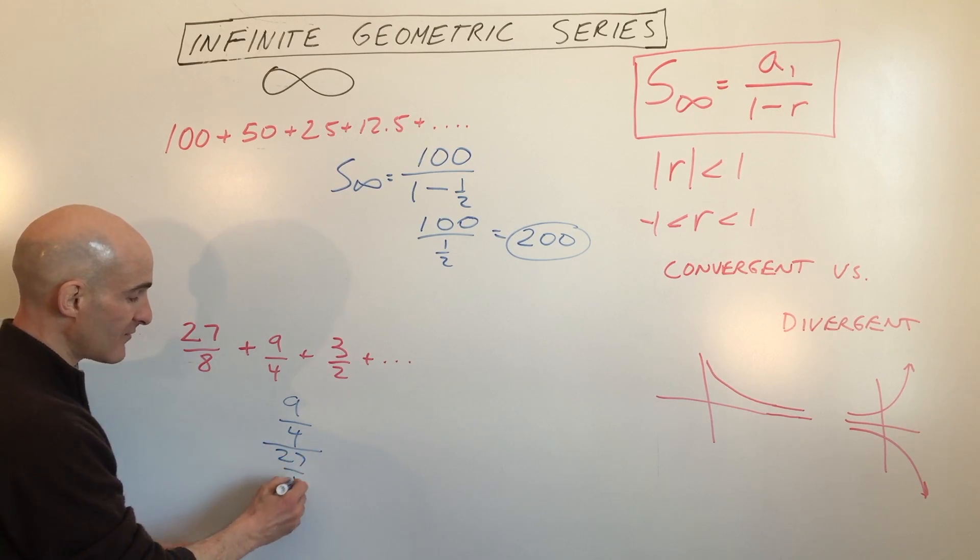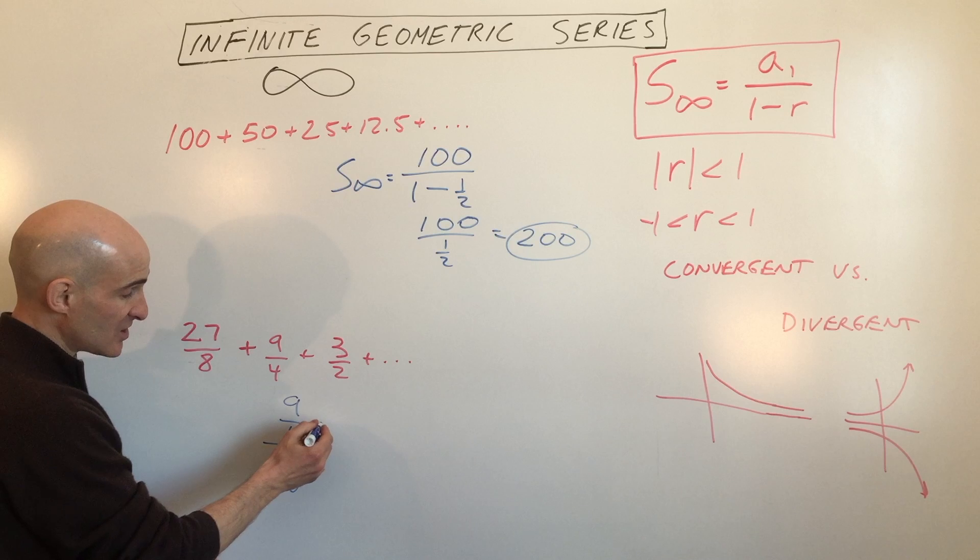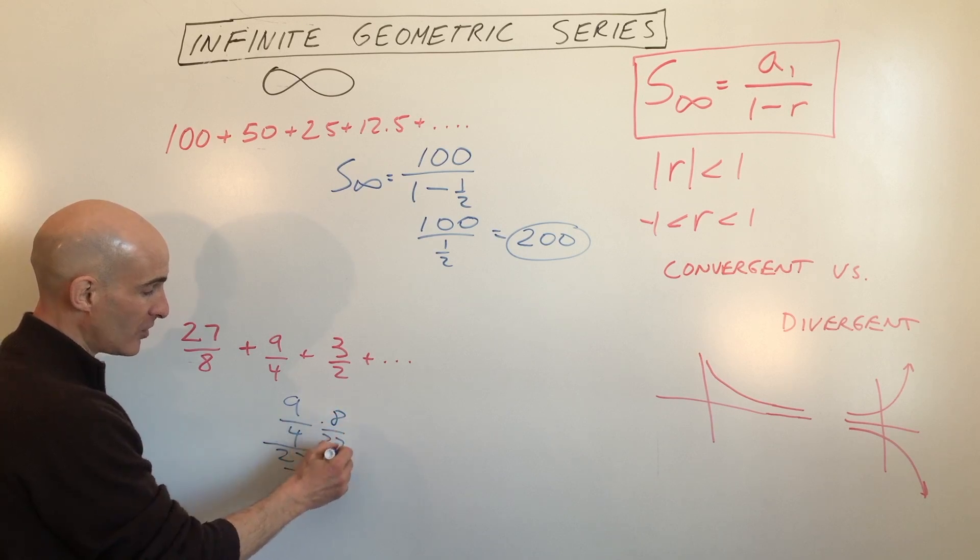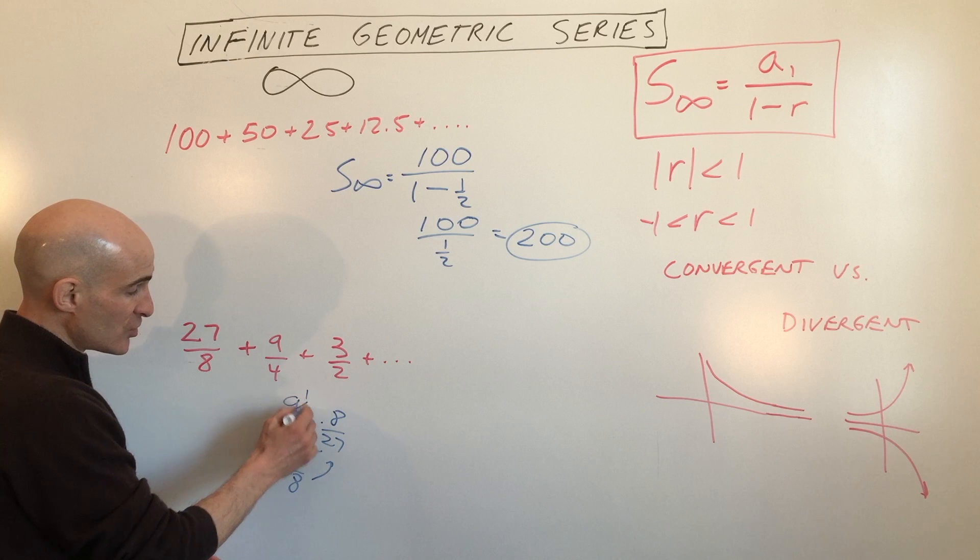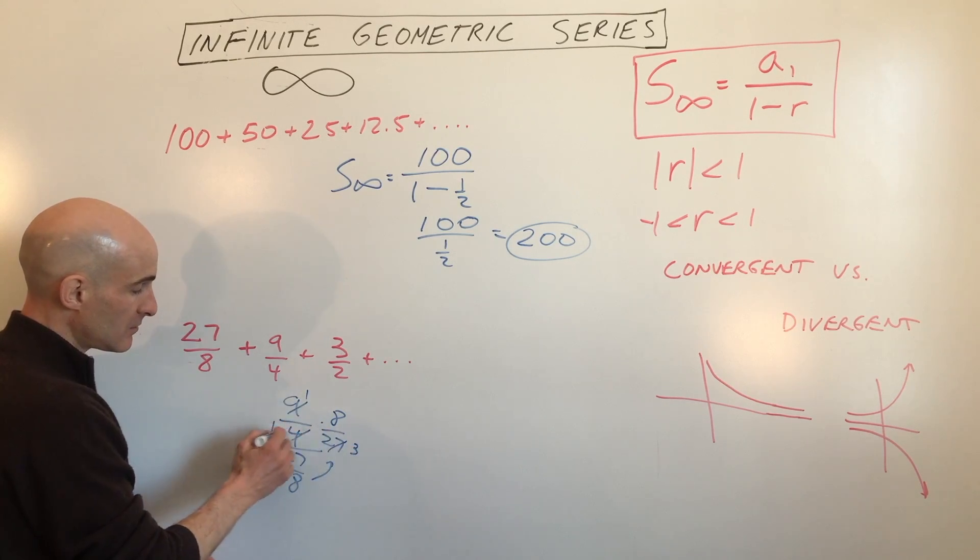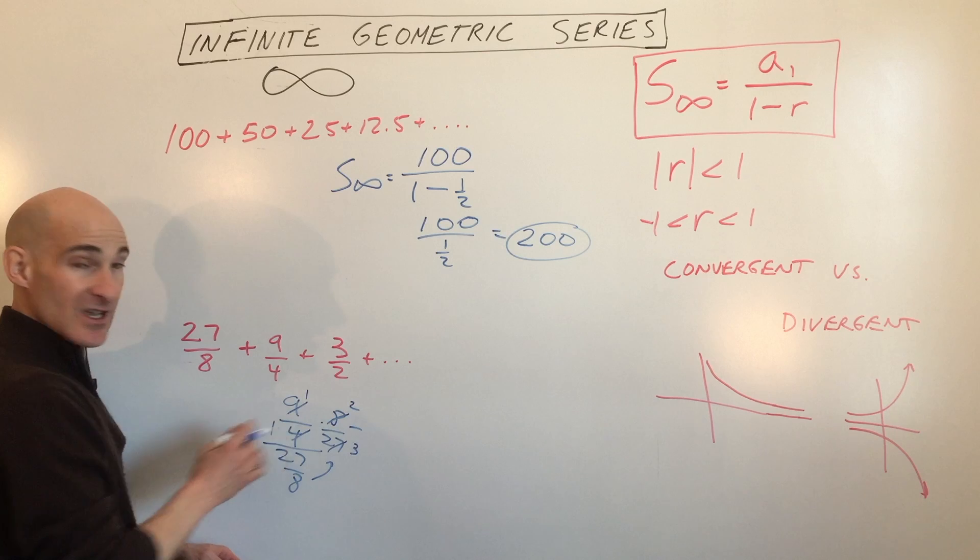So 9 fourths divided by 27 eighths. When you divide by a fraction, it's like multiplying by the reciprocal. So I just flip that over. We're going to do some reducing. It looks like it's two thirds.